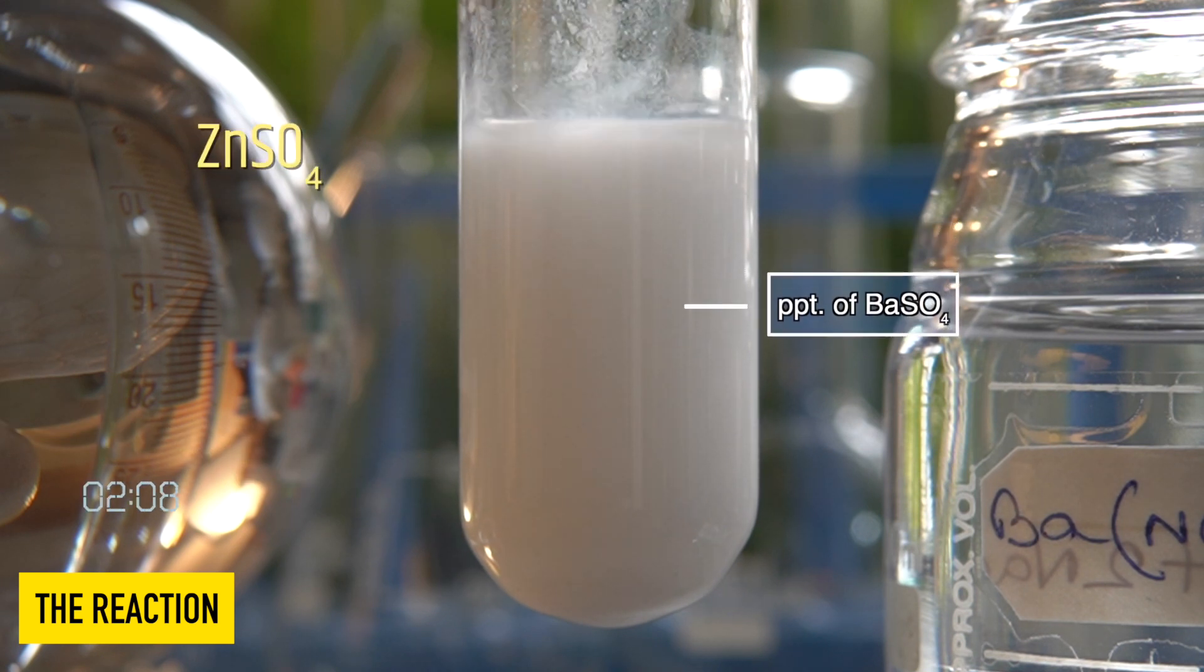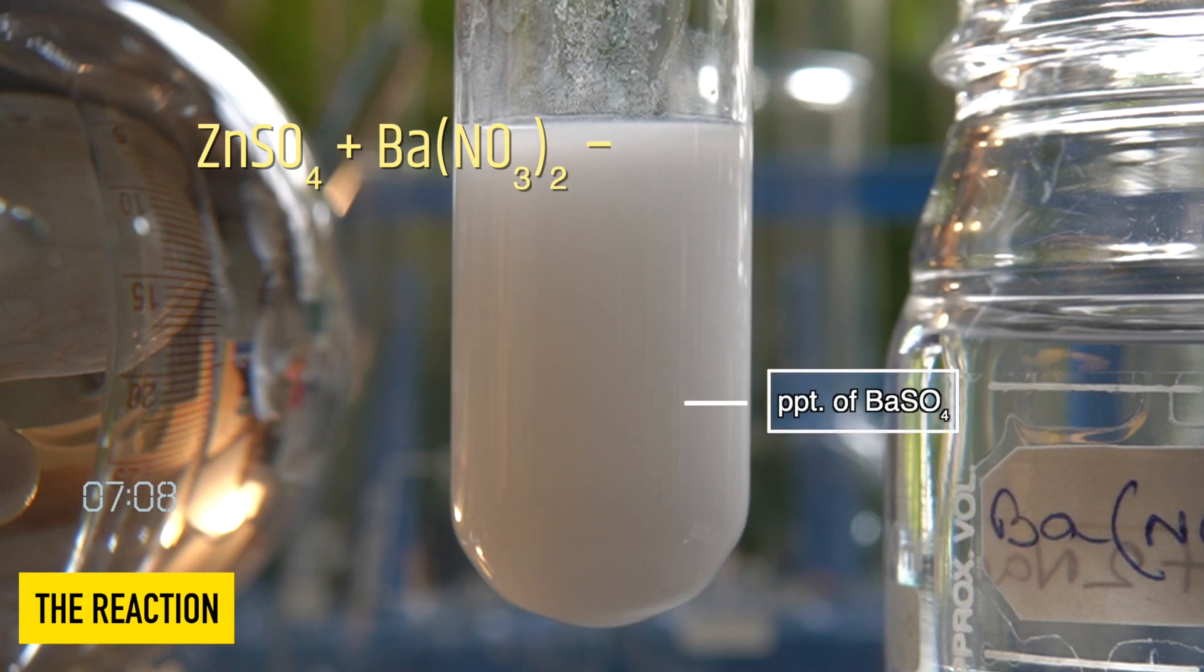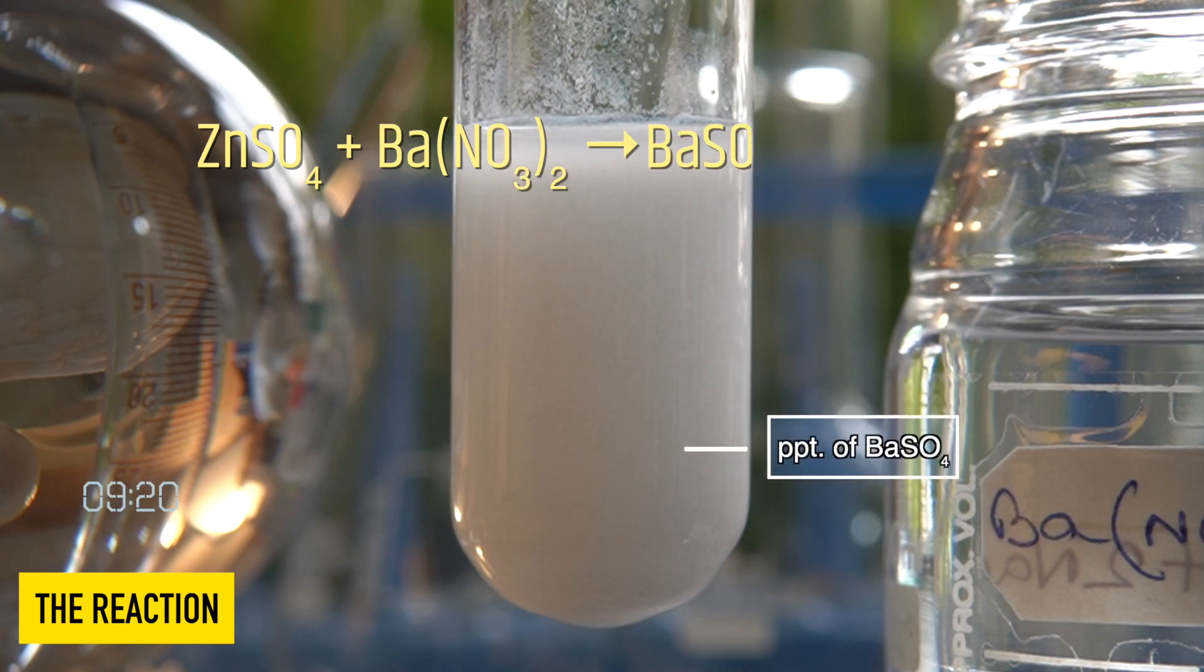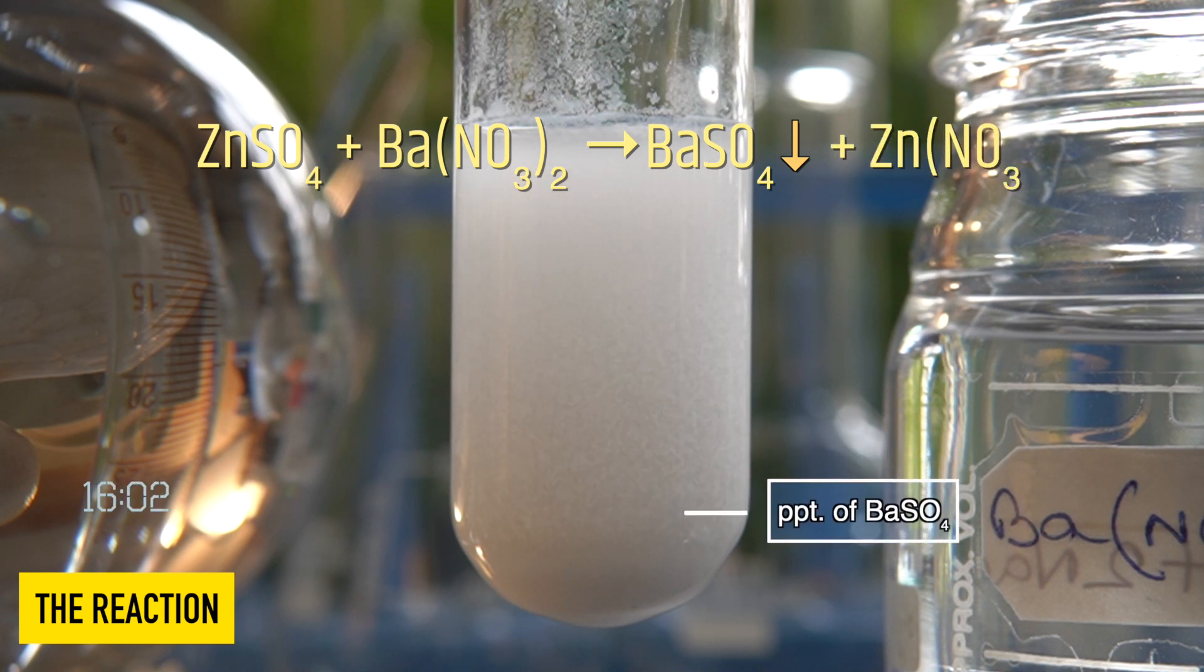So in this reaction, zinc sulfate reacts with barium nitrate to produce a white insoluble precipitate of barium sulfate along with zinc nitrate.